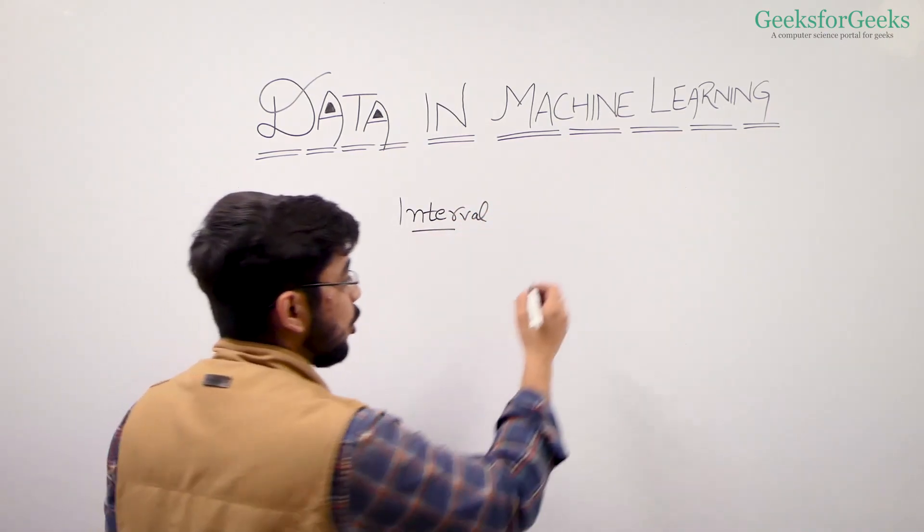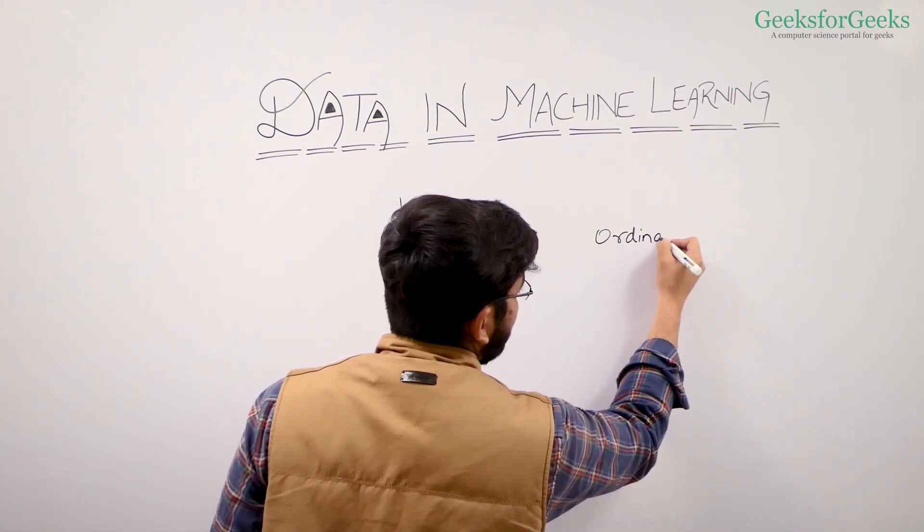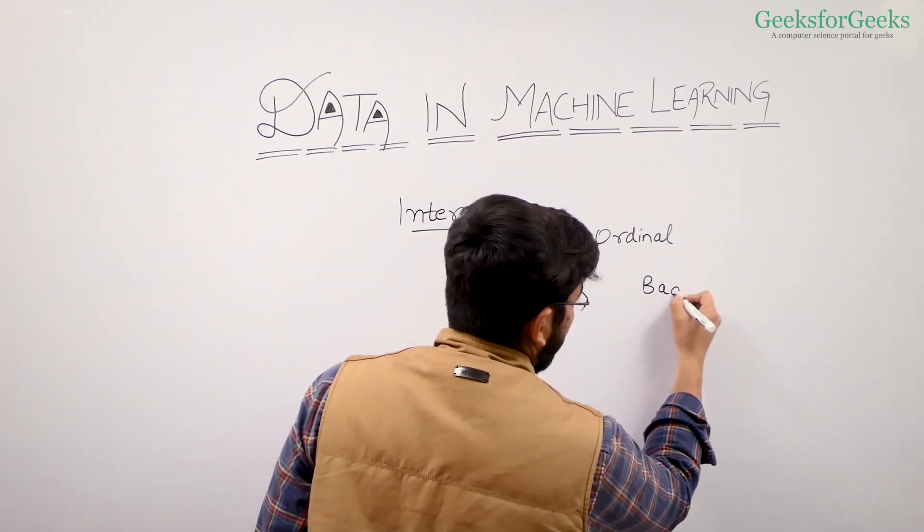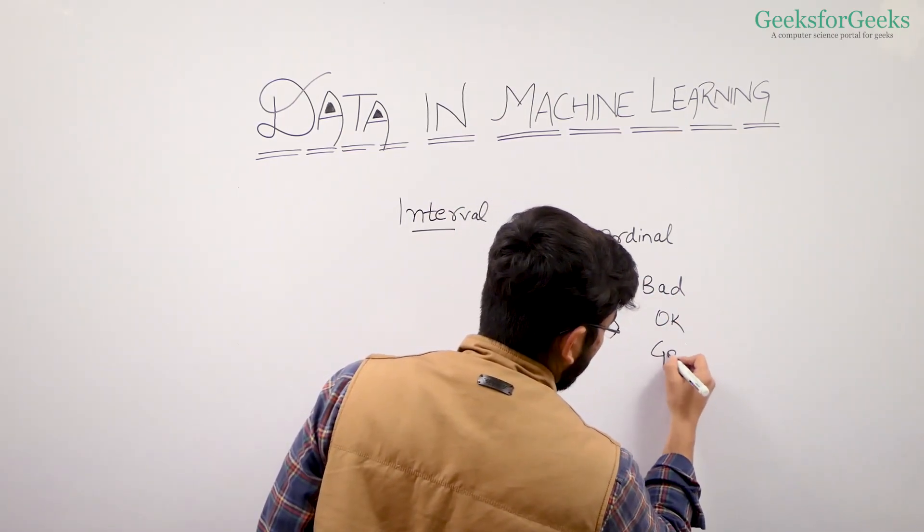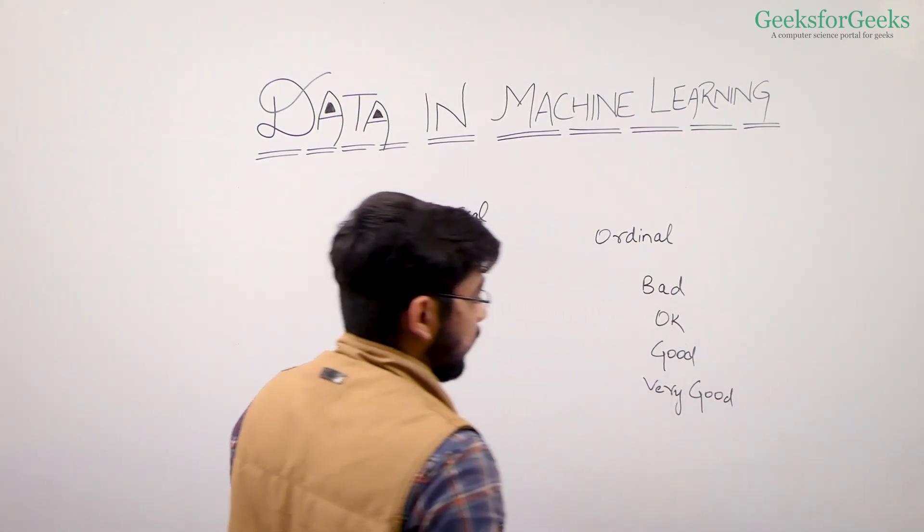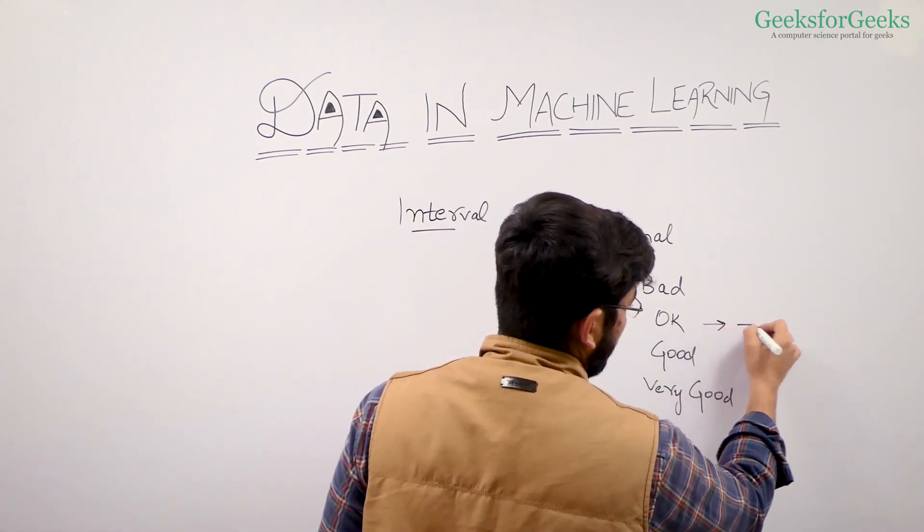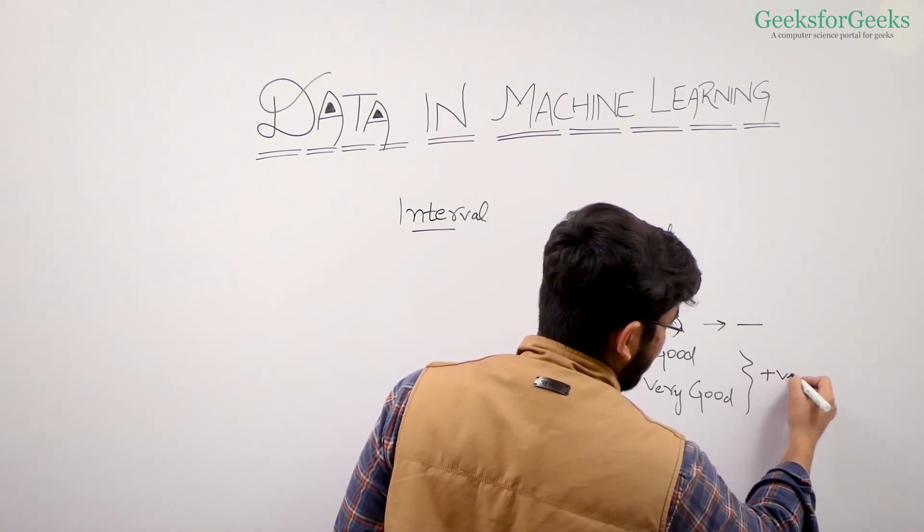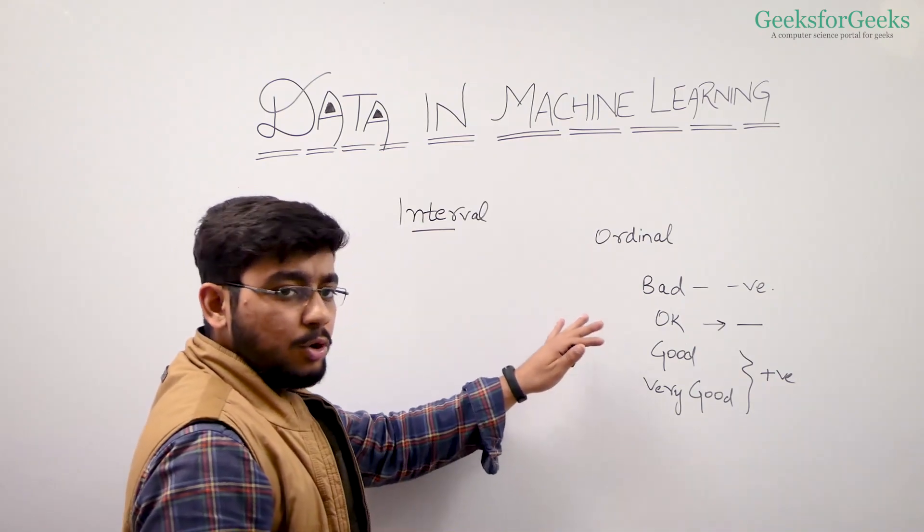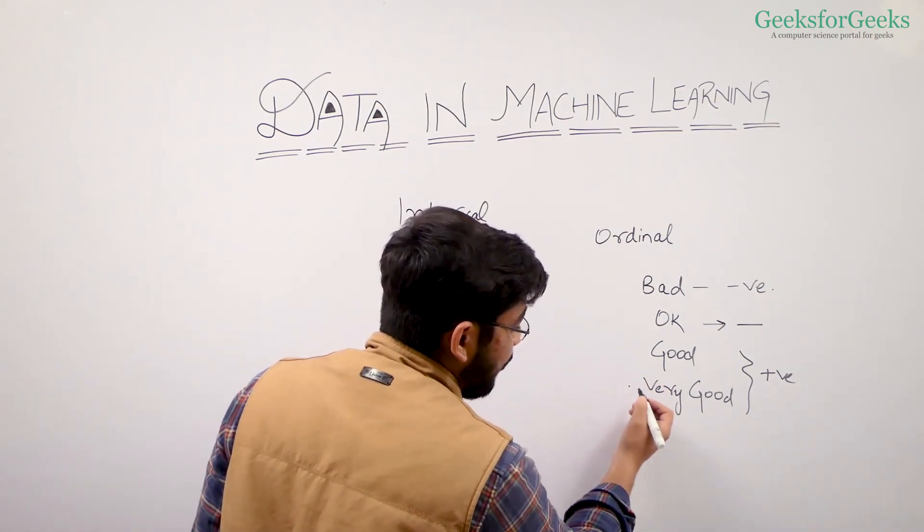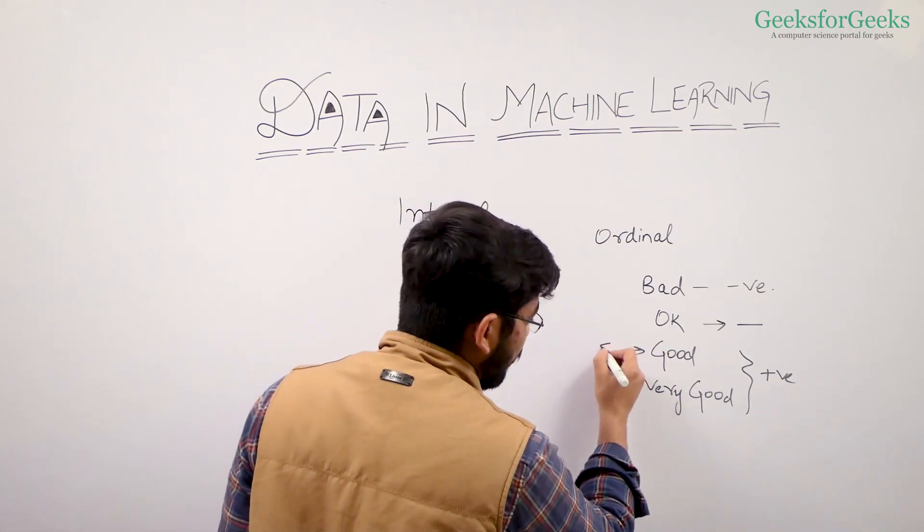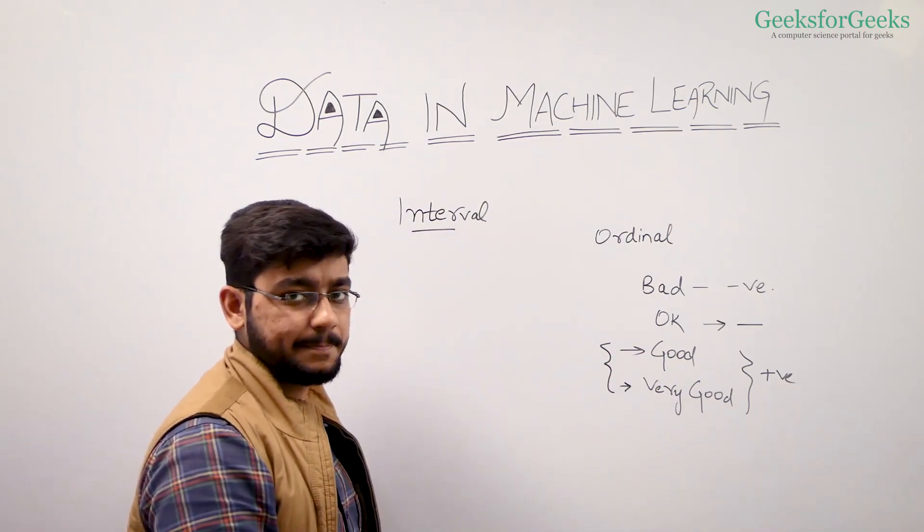You have studied about ordinal data, which was qualitative data with natural ordering. We had bad, okay, good, very good. We knew that okay was neutral, good and very good were positive, bad was negative. But what we don't know is how good, how positive this label is from this label. We don't know the clear difference between these two labels.